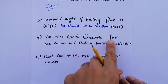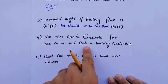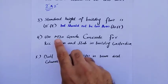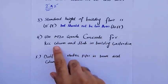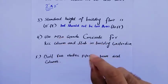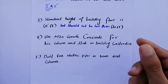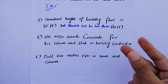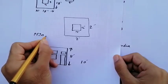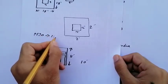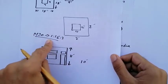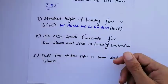Use M20 grade concrete for RCC columns and slabs in building construction. Minimum use M20 grade concrete — it is the best grade for beams, columns, and slabs. The mix ratio is 1:1.5:3 — use this for RCC beams, columns, and slabs in building construction.